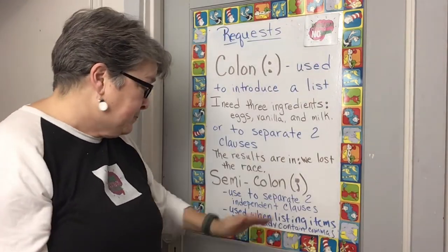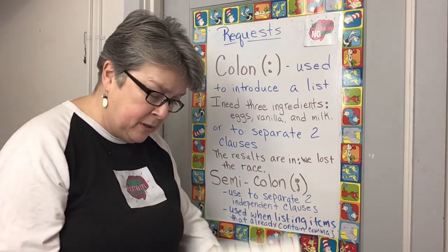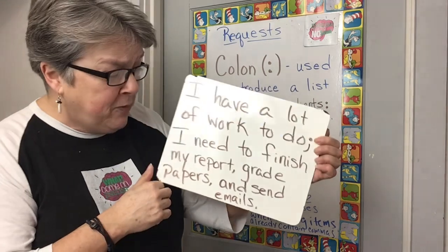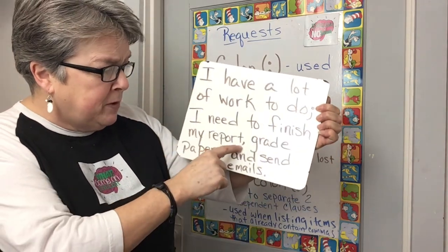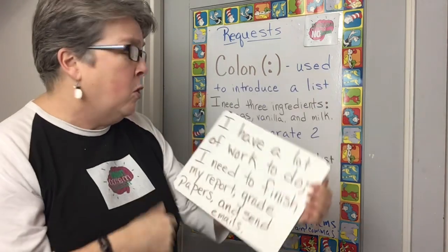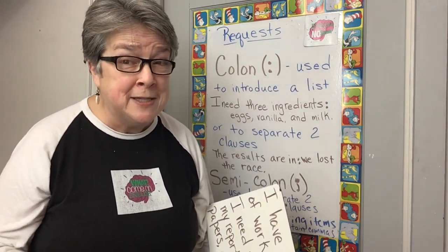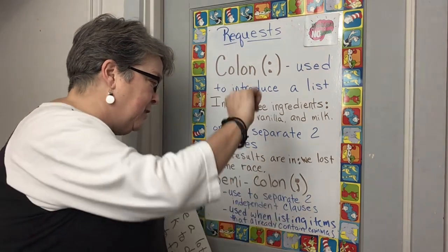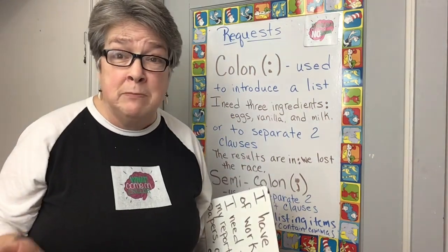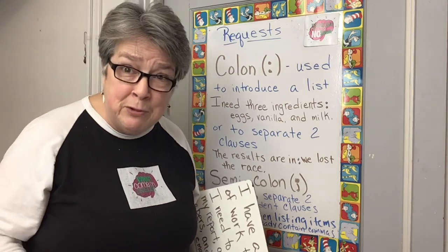Or, the semicolon is used when listing items that already contain commas. It's a two for one. The list items have commas in them already, so you put semicolons to avoid confusion.